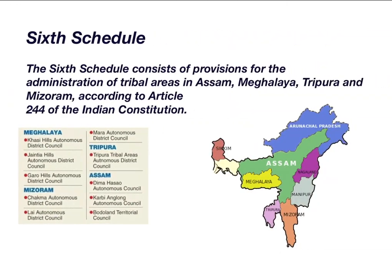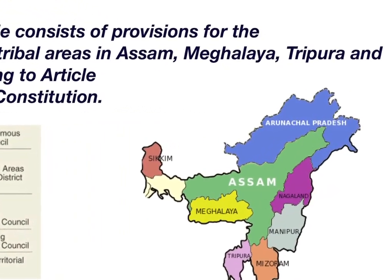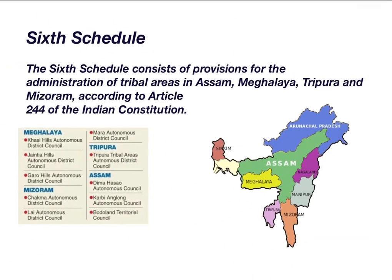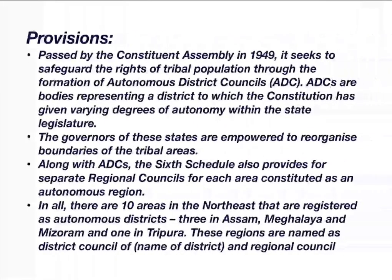Before understanding the Bodoland Territorial Council further, we need to know what the Sixth Schedule is. The Sixth Schedule provides provisions to administer tribal areas in four states: Assam, Meghalaya, Tripura, and Mizoram — all in our northeastern region. There is also mention of this in Articles 244 and 275 of our Constitution.